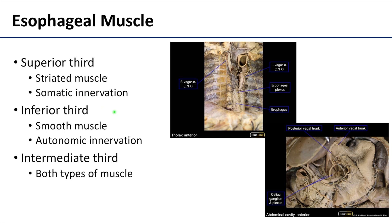The inferior third of the esophagus is smooth muscle, just like you would expect, with autonomic innervation. But right around the middle portion, or the thoracic portion, you're going to have both types of muscle cells — both striated muscle as well as smooth muscle. So this is a distinction that you have in the esophagus that you won't have in the rest of the GI tract.